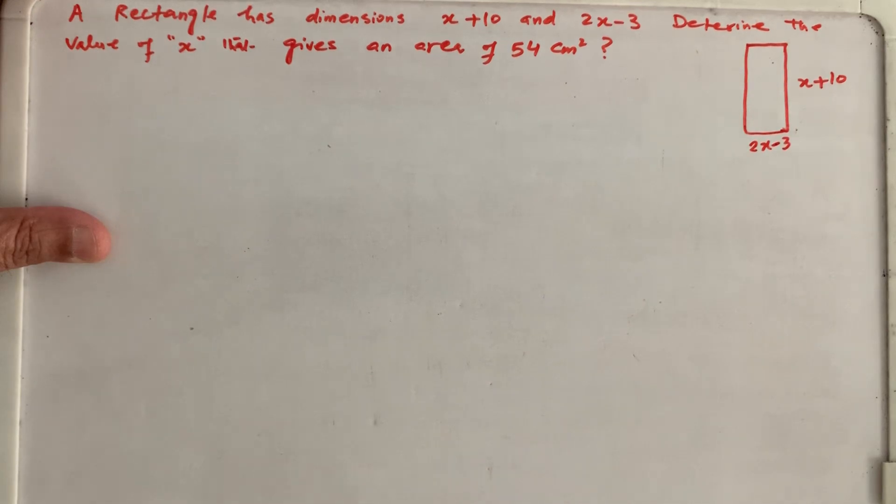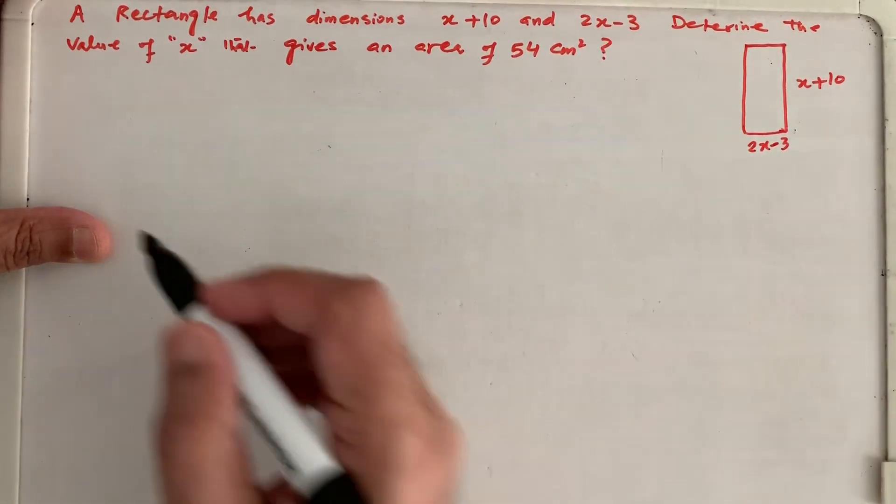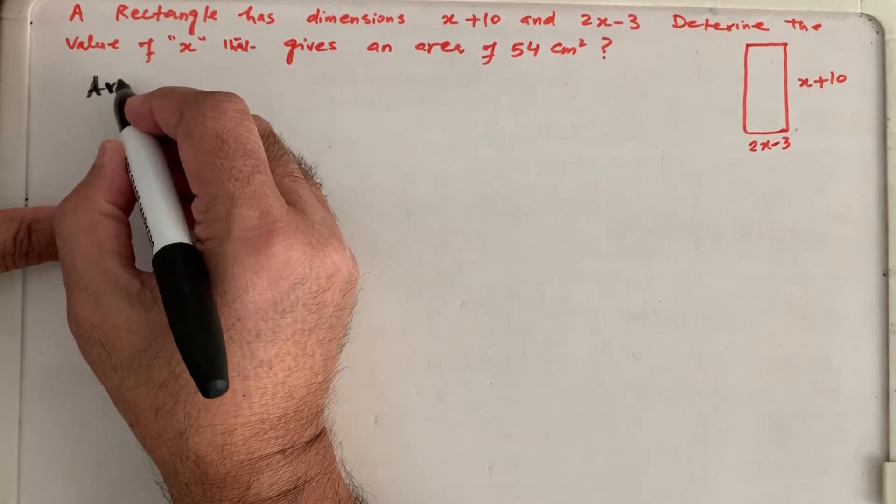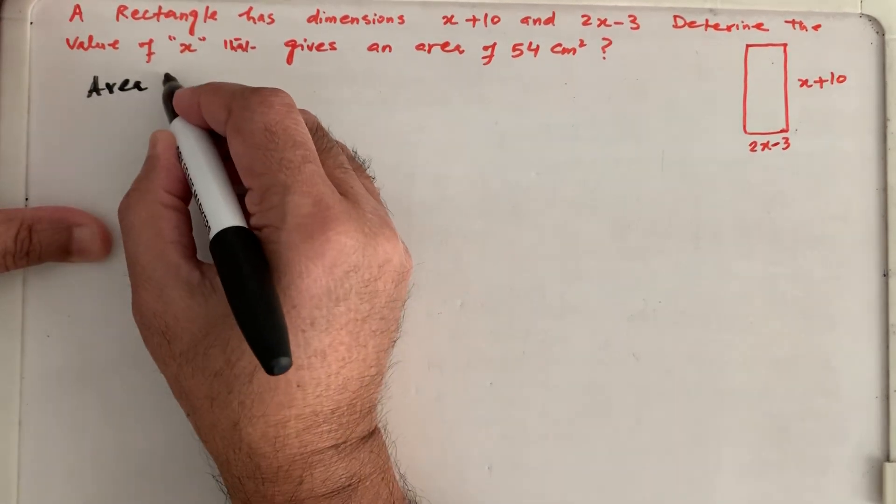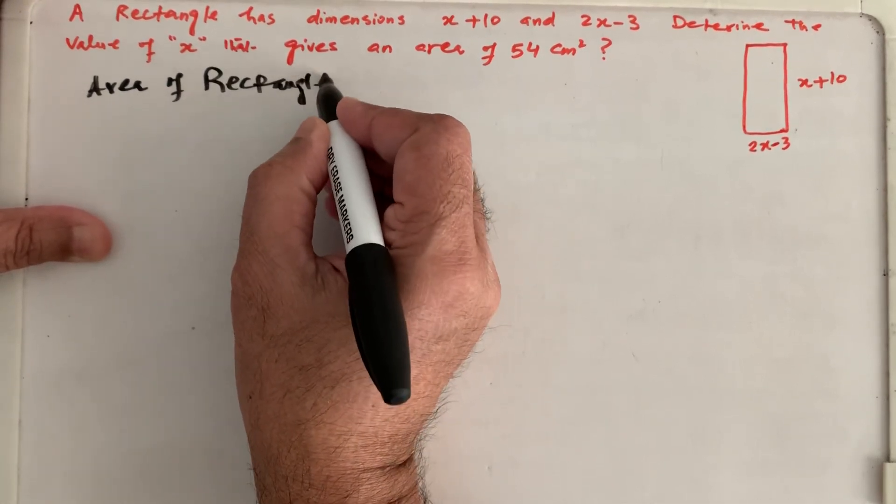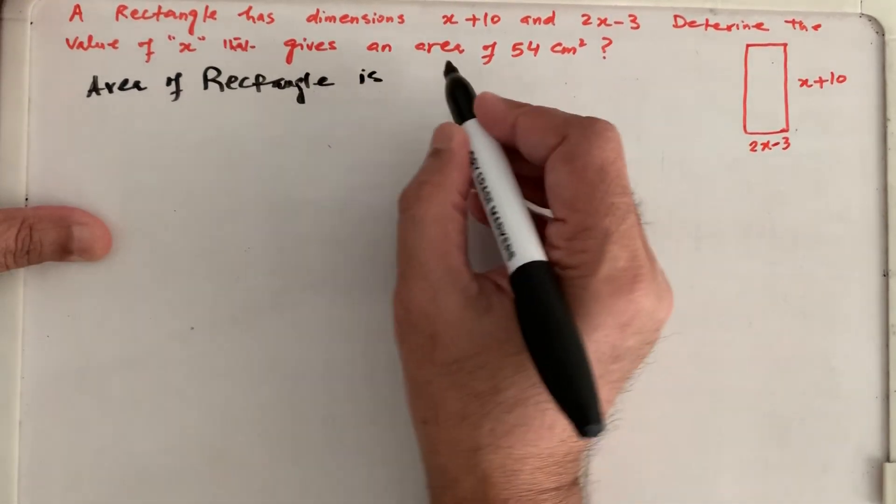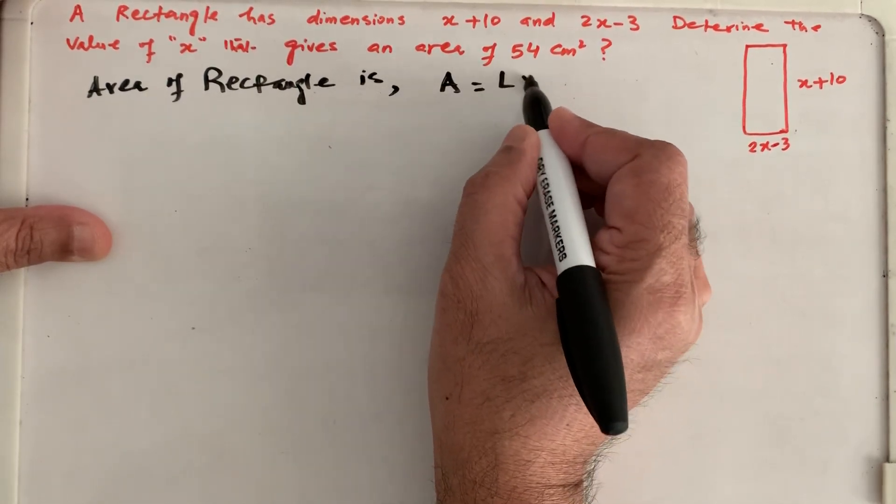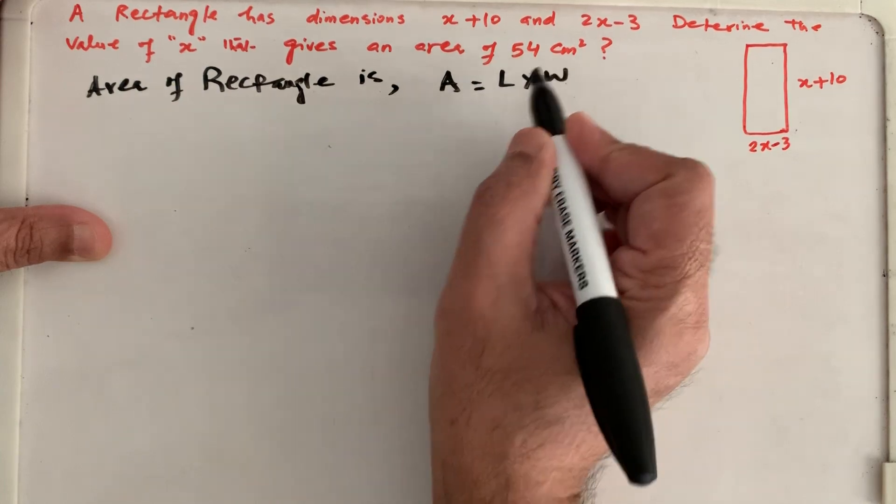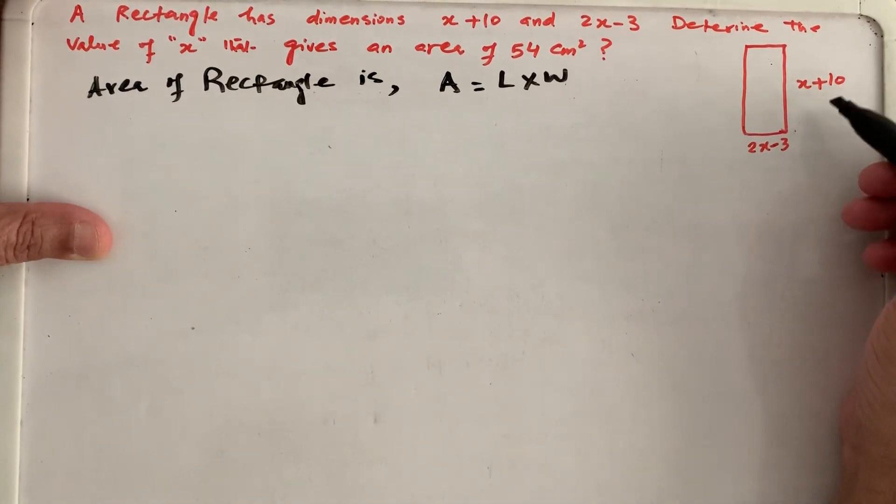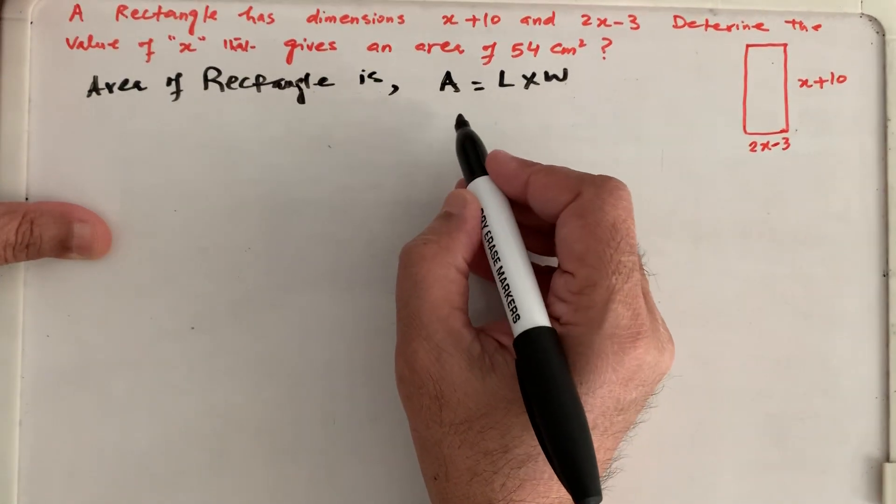Area of 54 cm square. So we know that area of a rectangle is length times width. And both of them are given us in terms of algebraic expression, x plus 10 and 2x minus 3. So we have to put it here, the data.